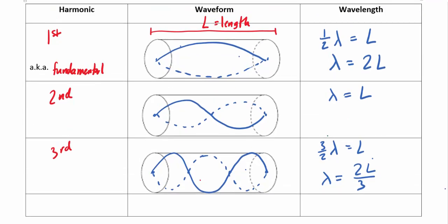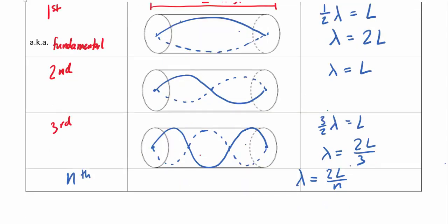This carries on for the fourth, fifth, sixth harmonics and beyond — higher harmonics are less likely to appear but do exist. Looking at the pattern: the fundamental gives λ = 2L, the next gives λ = L, then λ = 2L/3. The general formula for the nth harmonic is λ_n = 2L/n.